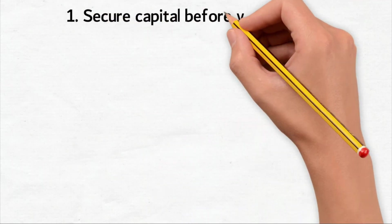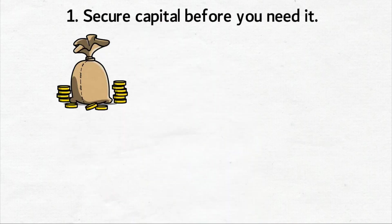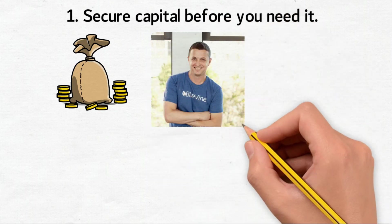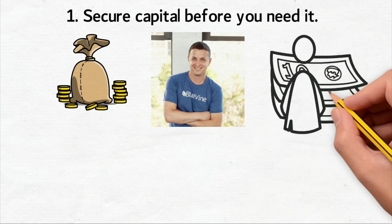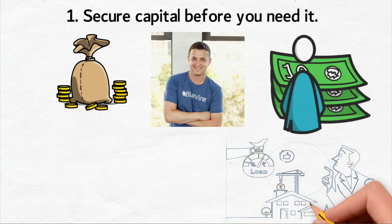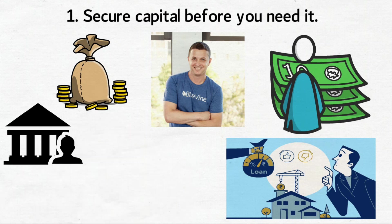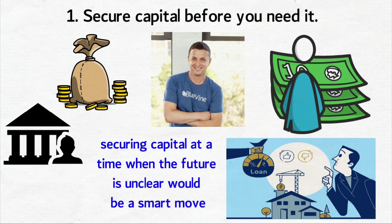Secure capital before you need it. Having cash reserves and other financing options to fall back on once a recession hits is a great tool to stay afloat. According to AI Liftschitz, flexible working capital will be the single most important factor to help keep doors open. While acquiring capital may be a challenge once a recession hits, there is still time to enact this strategy. Raising capital has become much easier today for small business owners. Banks are easing credit and fintech startups are expanding online lending options. So, securing capital at a time when the future is unclear would be a smart move.